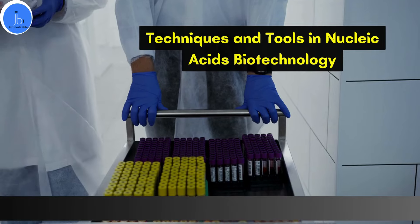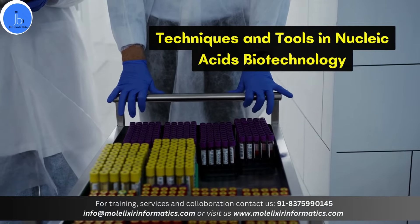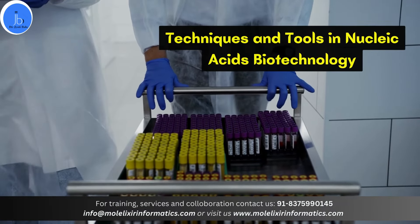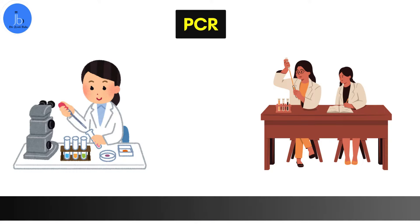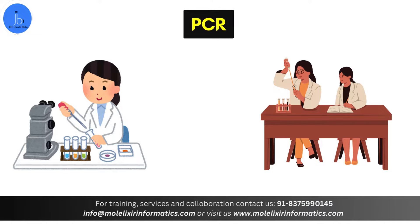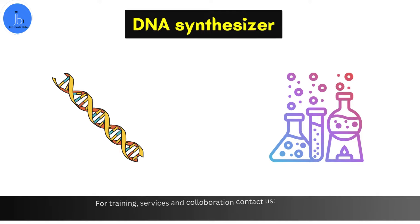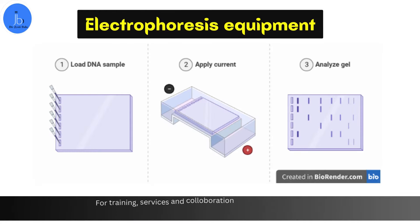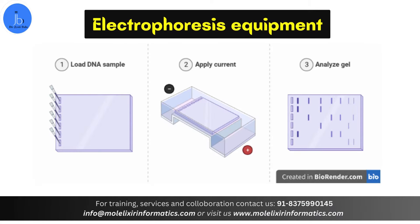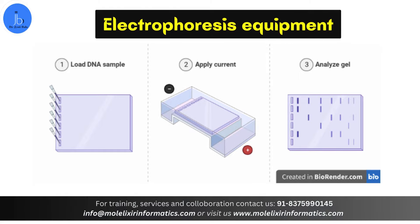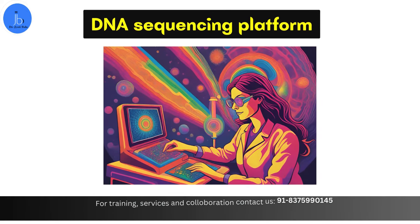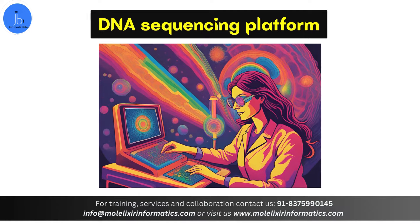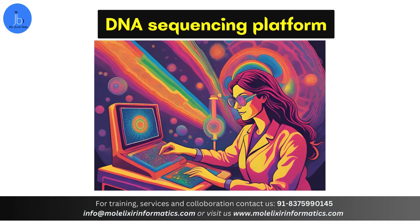These are a few of the key techniques and tools utilized in the nucleic acid biotechnology sector. Number one is the PCR machine, mainly used for genetic engineering and biotechnological experimental purposes. The next one is a DNA synthesizer, which can be utilized for multiple experiments related to oligonucleotides. For the analysis of DNA and RNA, you can utilize electrophoresis equipment. Along with that, a very crucial one is the DNA sequencing platform, be it Sanger or NGS platform.